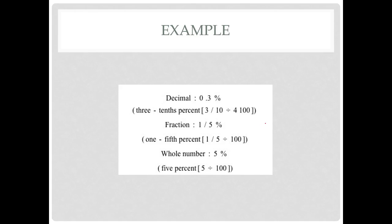So here's another example as a decimal 0.3 percent. Three tenths of a percent divided by 100. The fraction of 1 over 5% is one-fifth of a percent. So one-fifth divided by 100 as a whole number we can write five percent. Five divided by 100.